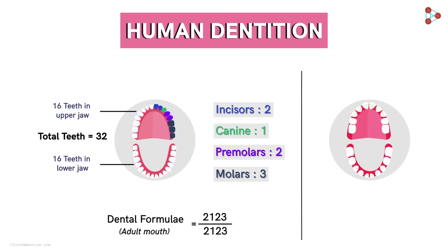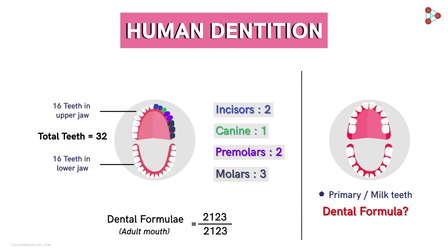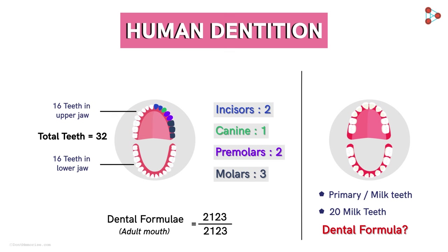Here we have an image of an infant mouth with primary or milk teeth. Can you tell me the dental formula for this arrangement? There are in total 20 milk teeth in infants. Try cracking this interesting question and do leave your answers in the comments section below.